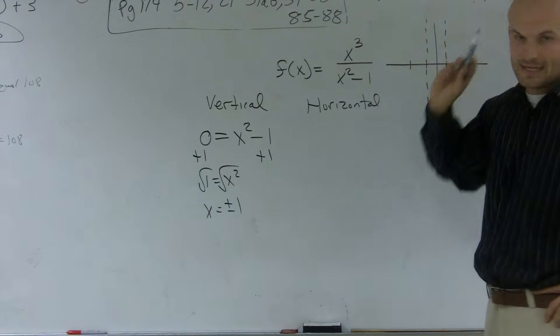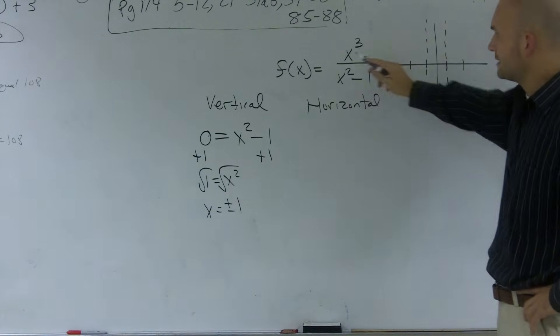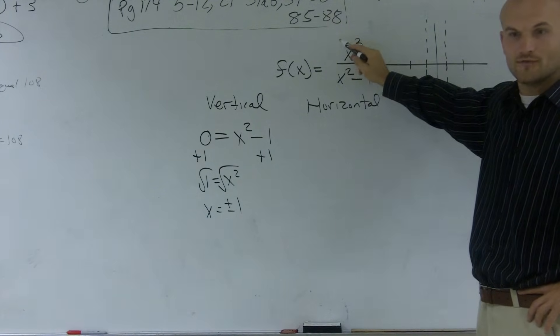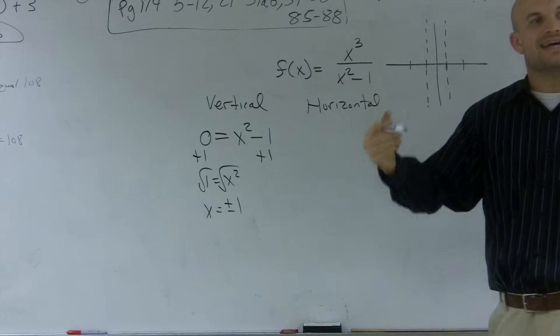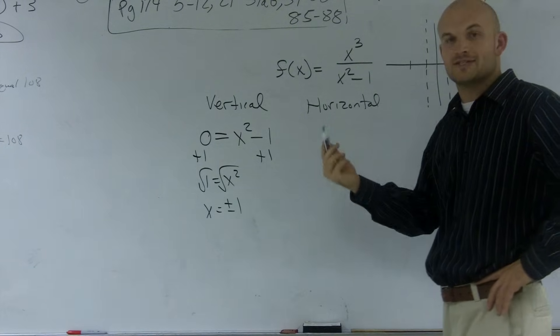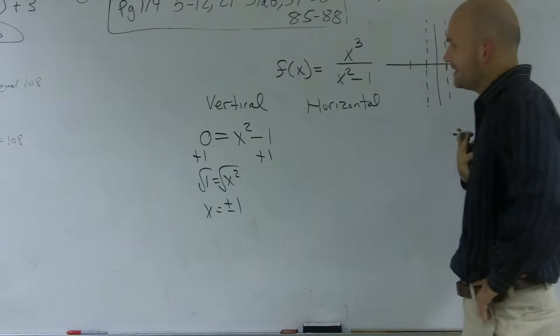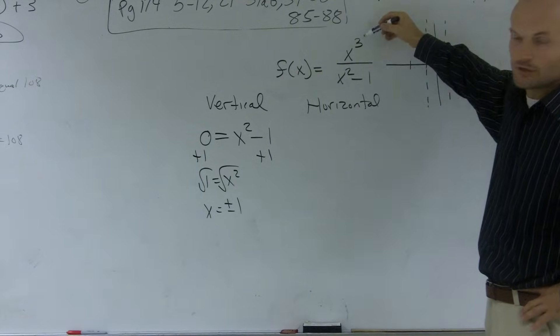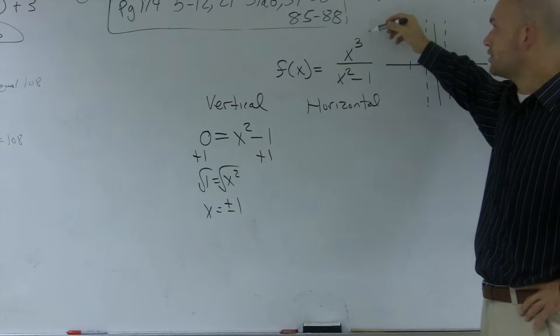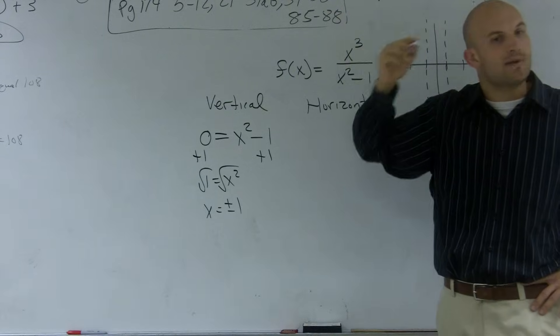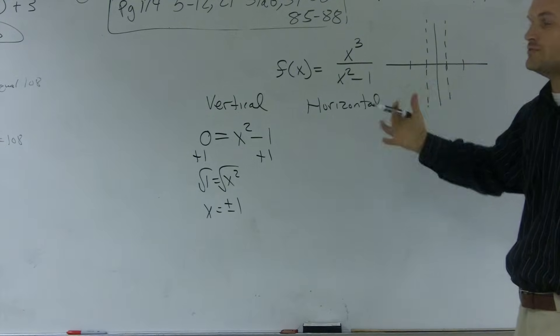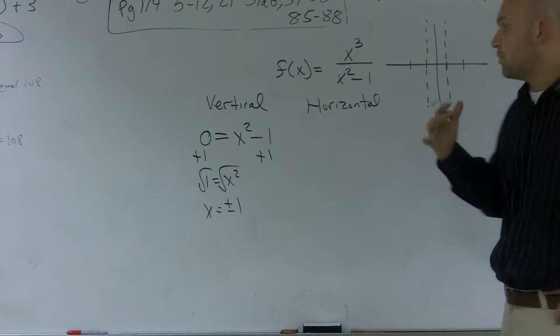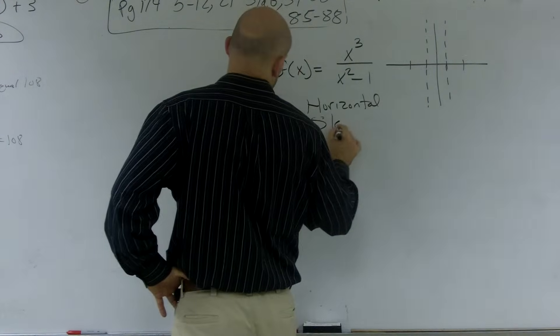If these two degrees were equal to each other, then you need to take the coefficient of each of those leading terms and divide them. And that's what y would equal as your horizontal asymptote. In this case though, when you have your degree on your polynomial is larger than a degree on the bottom polynomial, you do not have a horizontal asymptote. What you have is what we call a slant asymptote.